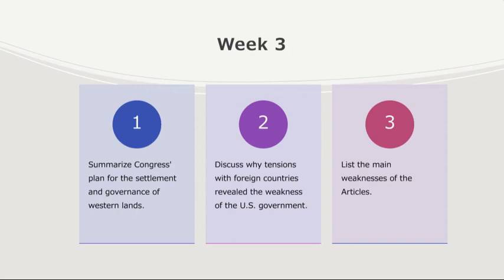We're also going to talk about why tensions with foreign countries revealed the weaknesses of the U.S. government during this period. The early years of the United States were marked by diplomatic tensions and conflicts with foreign powers. The most significant of these was the ongoing conflict with Britain and Spain over issues like trade, territorial boundaries, and control of the Mississippi River. These disputes highlighted the fragility of the U.S. government under the Articles of Confederation.